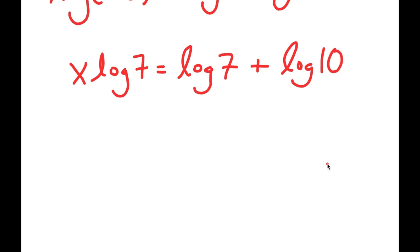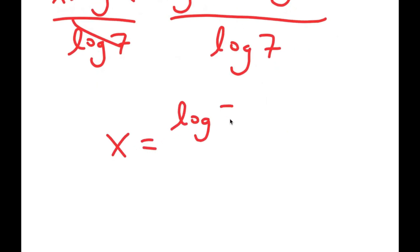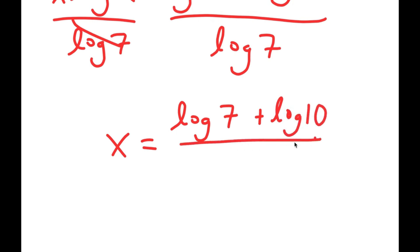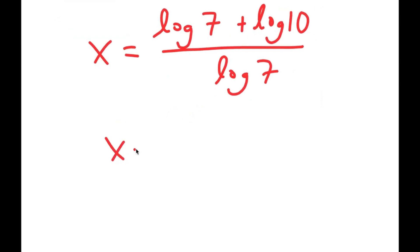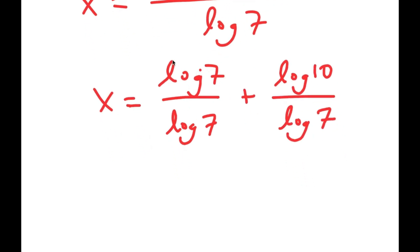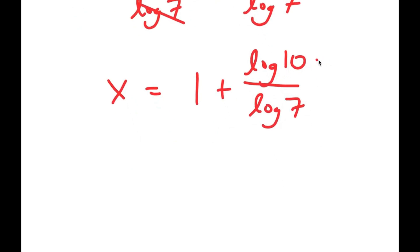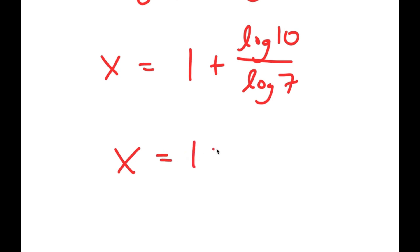From here, I'm going to divide both sides by log 7, because we want to isolate x and the only way to do that is to get rid of this log 7. These two cancel out, and I get x is equal to log 7 plus log 10, all over log 7. I can rewrite this as log 7 over log 7 plus log 10 over log 7. Log 7 and log 7 cancel out, so I get x is equal to 1 plus log 10 over log 7. And log 10 is actually equal to 1, so now I get x is equal to 1 plus 1 over log 7. And this is my answer.